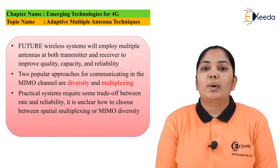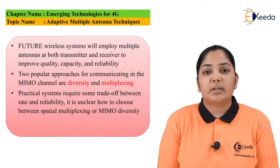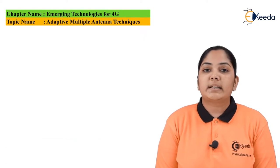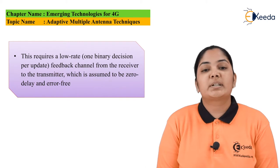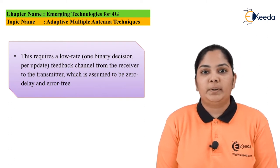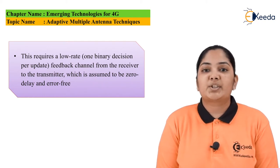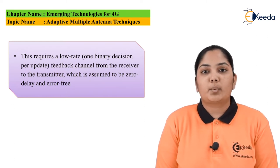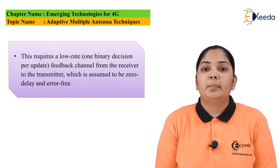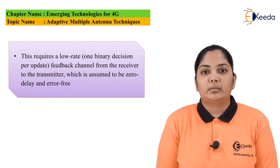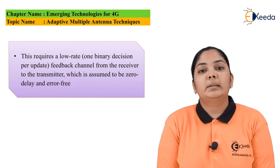Practical systems require some trade-off between rate and reliability. We require to choose from either spatial diversity or spatial multiplexing. In order to select between rate and reliability, there is a 1-bit feedback channel transmitted from the receiver to the transmitter. This feedback channel should have no error and no delay. It gives us the idea of whether rate or reliability is required depending on the current scenario, such as channel availability and network traffic. Adaptive antenna technology is basically switching between diversity and multiplexing.